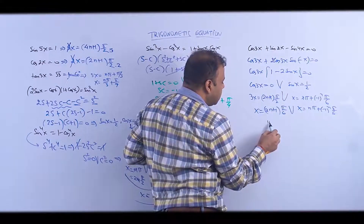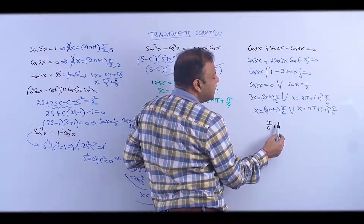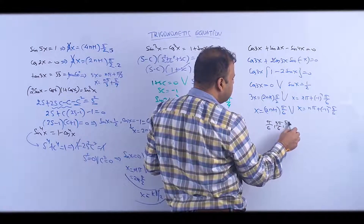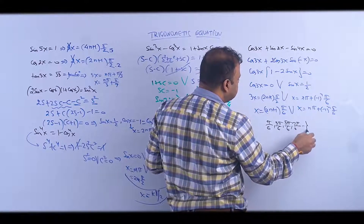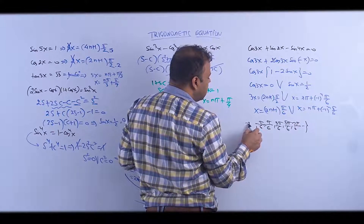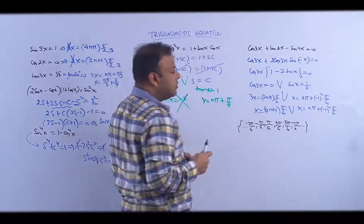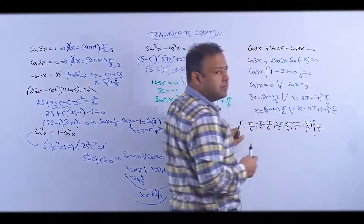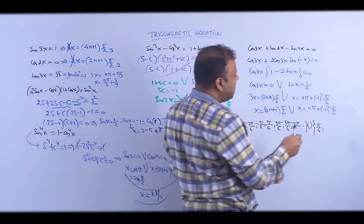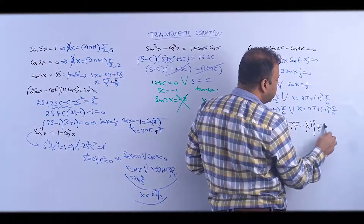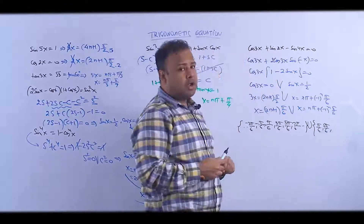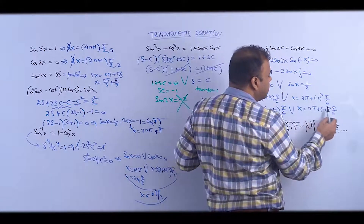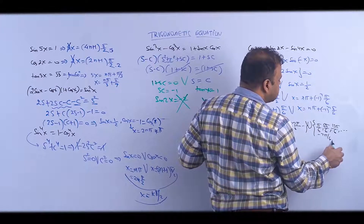For cos(3x) = 0: putting n = 0 gives π/6, n = 1 gives 3π/6 = π/2, then 5π/6, 7π/6, -π/6, -3π/6... For sin(x) = 1/2: n = 0 gives π/6, n = 1 gives π - π/6 = 5π/6, n = 2 gives 2π + π/6 = 13π/6, n = -1 gives -π - ... = -7π/6, and so on.